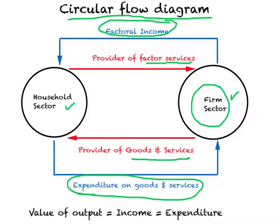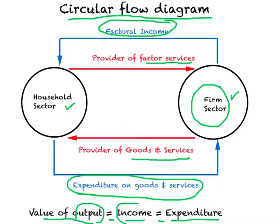Based on this circular flow diagram, we know that the value of output must equal the income of the country, and the income of the country must equal the expenditure. All three will give us exactly the same number — and that number is GDP. So there are three ways to measure GDP: the output approach, the income approach, or the expenditure approach.